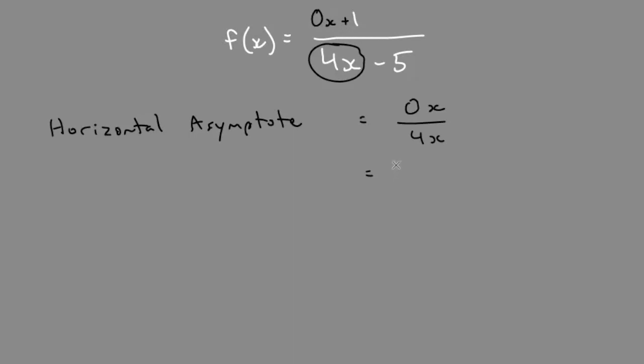Which would reduce to 0 over 4, or just 0. So therefore we have a horizontal asymptote at y equals 0.